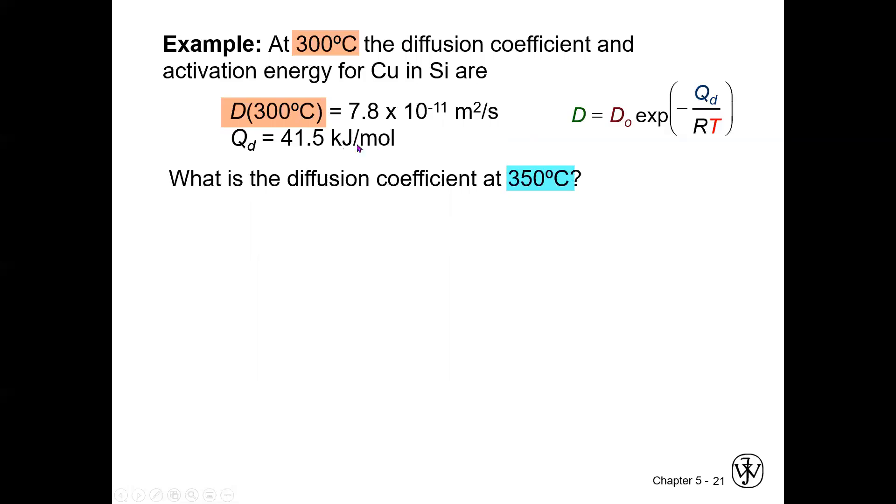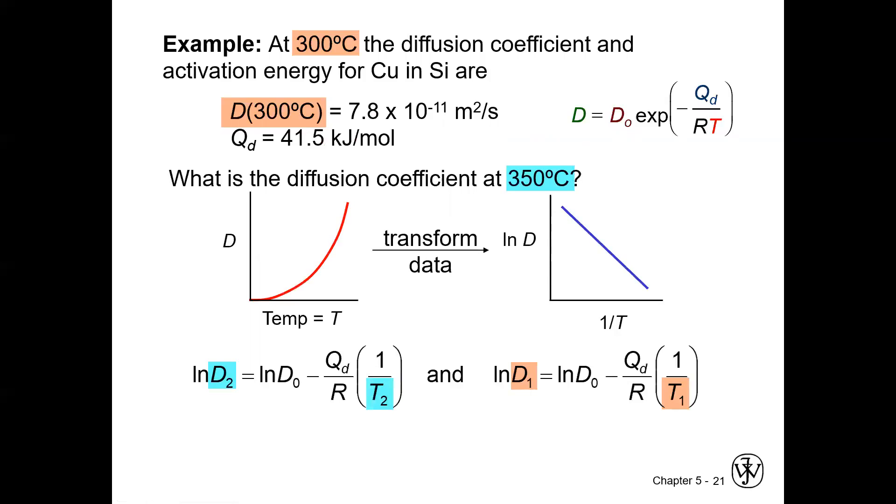All right. So we could just go ahead and plug in our value here for D, plug in for Q, and then solve for D0. Once we get that, we can then use the Q, given the D0 we just found with the new temperature of 350, calculate D. Another way to do it is to go ahead and do all the equation manipulation first, see what we get and put in the numbers at the end.